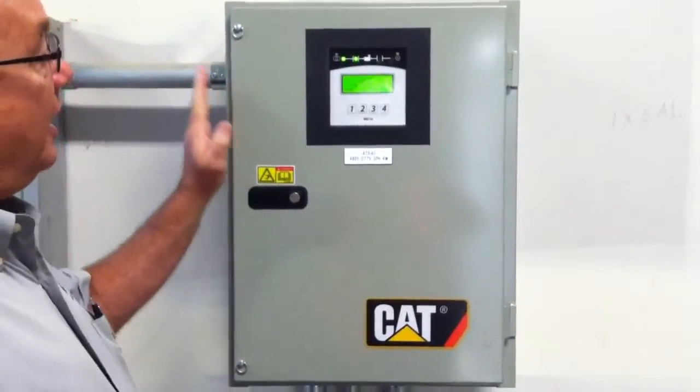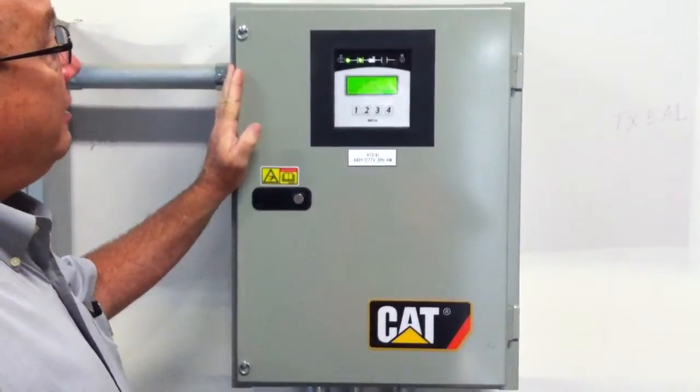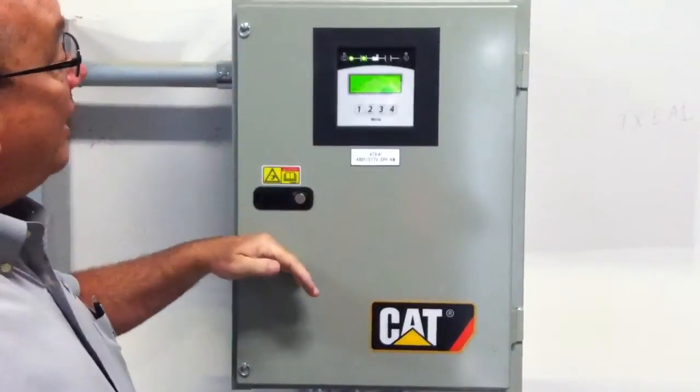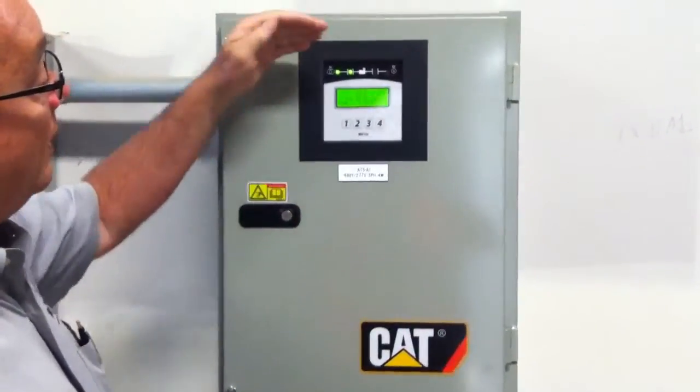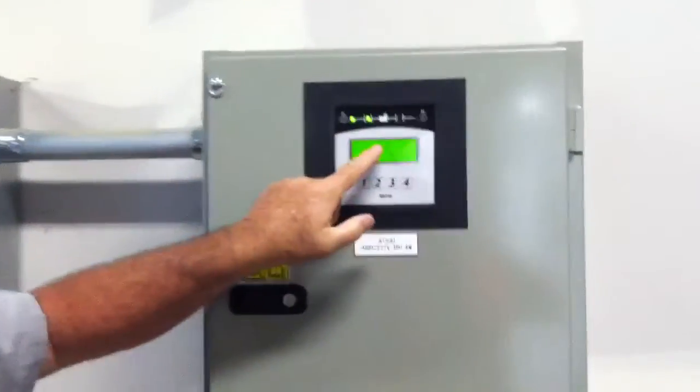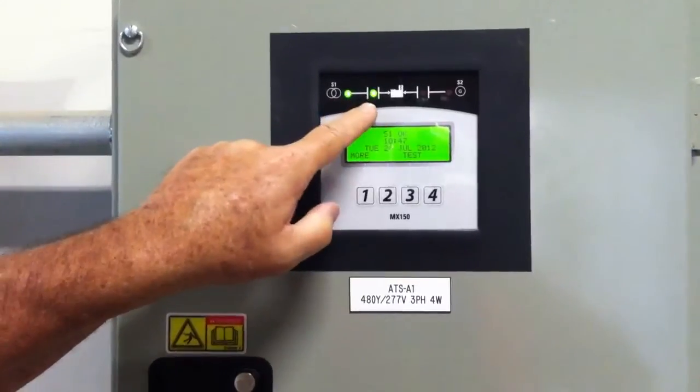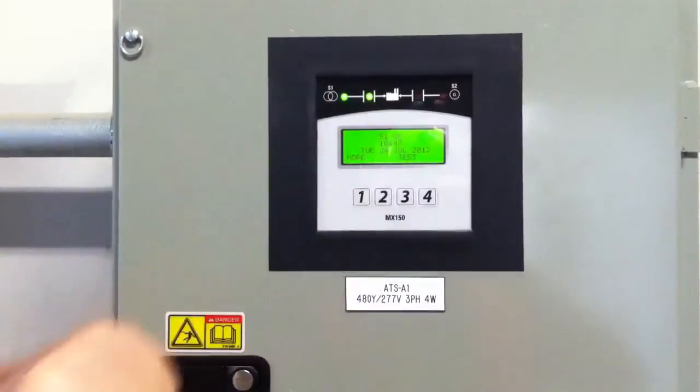This is the automatic transfer switch. As we look at the unit, automatic is our normal position, and we're in a position that's normal right now. It's telling us S1 is okay, and S1 is our utility source, and we're connected to the building. This is the symbol for our building.